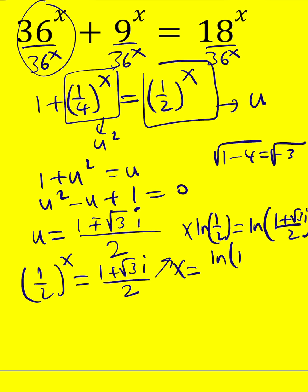ln 1 plus root 3i. Let me go ahead and fix this a little bit. 1 plus root 3i over 2 divided by ln one half, which you can also write as negative ln 2. I don't like fractions, do you?